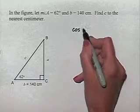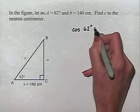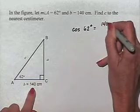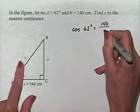So we're going to set up the equation where the cosine of 62 degrees equals the side adjacent, which is 140, divided by the hypotenuse, which is C.